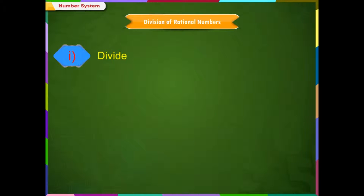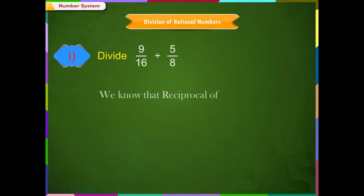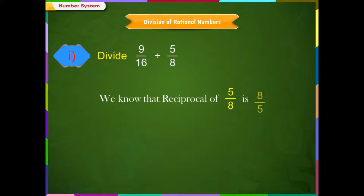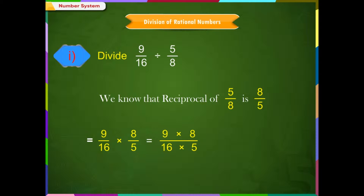Example 1: Divide 9/16 by 5/8. We know that the reciprocal of 5/8 is 8/5. Therefore, 9/16 divided by 5/8 equals 9/16 × 8/5, which equals (9×8)/(16×5), which equals 72/80, which equals 9/10.